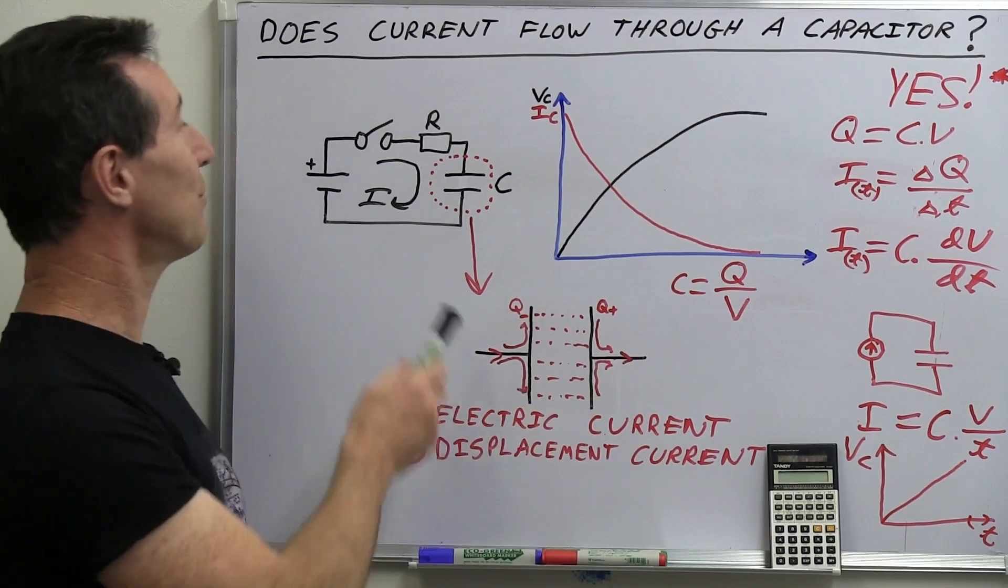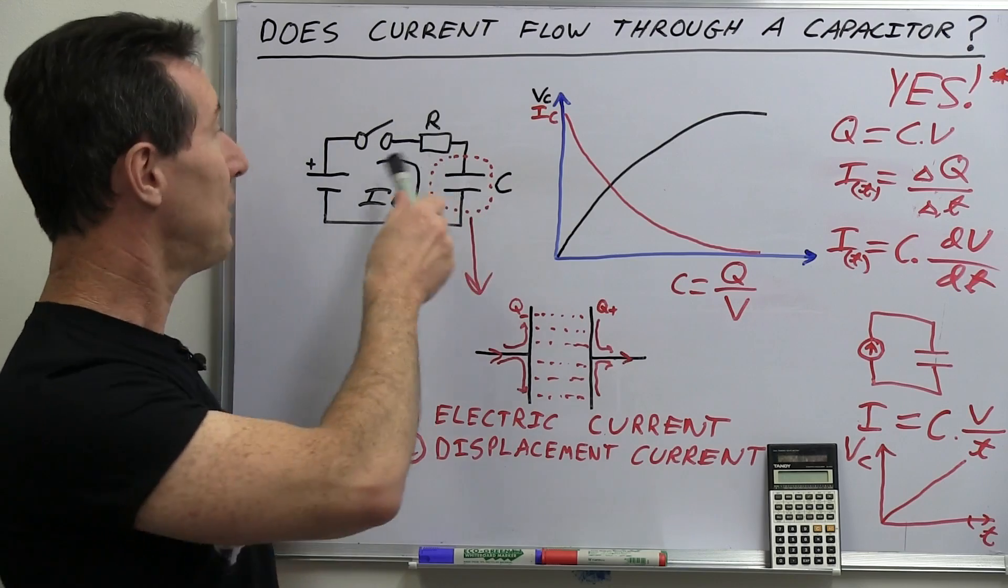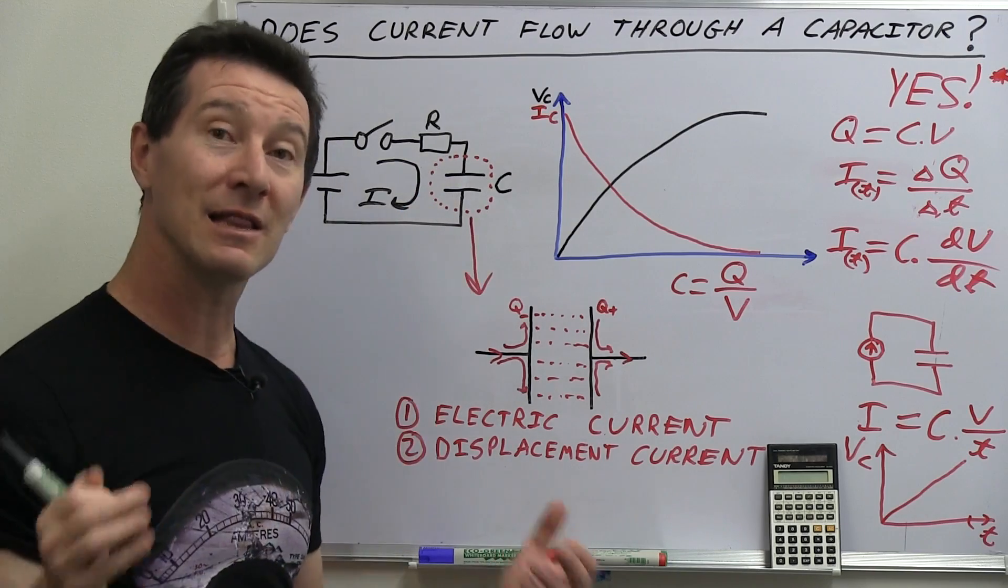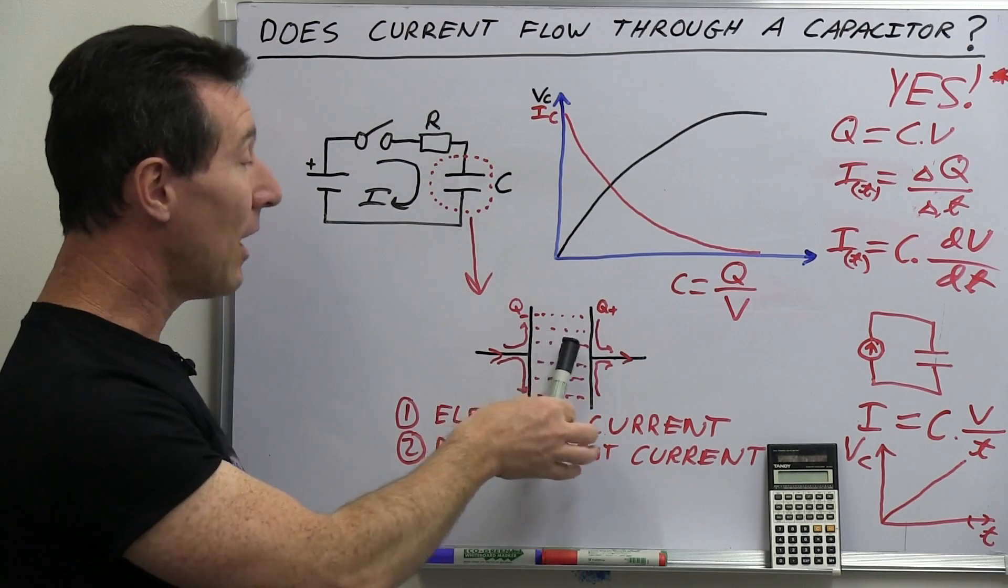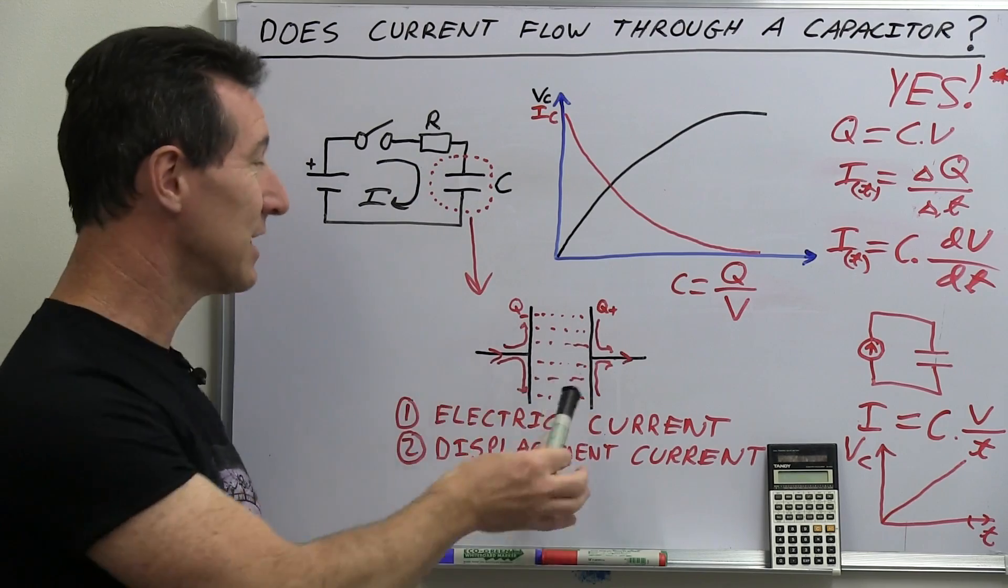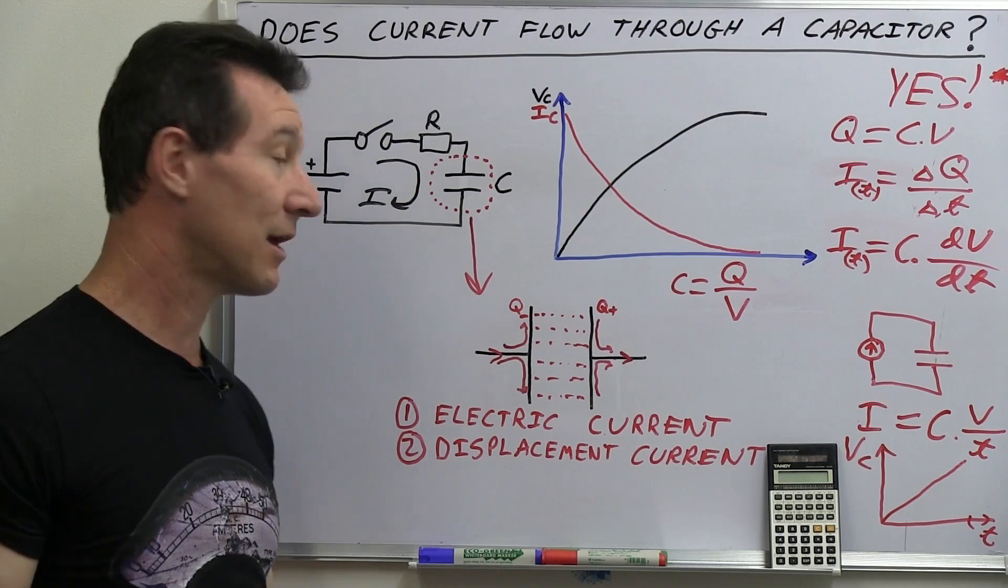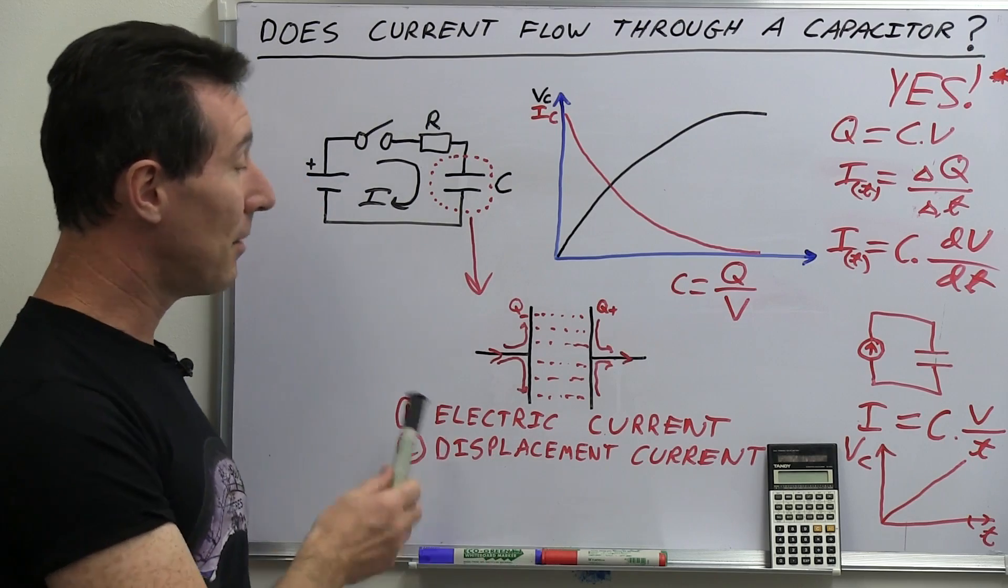So what it comes down to is that we've actually got two different types of current. There's electric current, which we explained right back at the start, is the flow of charge and electrons. And, but we know that electrons can't actually go through an insulator in a capacitor or anything else.